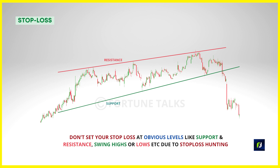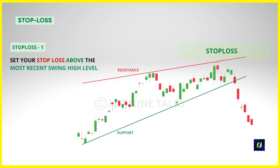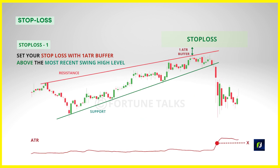For stop loss placement when trading the rising wedge pattern, you don't want to set your stop loss at obvious levels like support and resistance, swing highs or swing lows, because these are obvious levels to smart money as well. Your stop loss should be at a level that if crossed invalidates your trading setup. We are trading a rising wedge, and the pattern is invalid if the price breaks and closes above the top trend line resistance. So keep your stop loss above this resistance level. To be extra safe, give your trades more breathing space by setting your stop loss some distance away from the market structure using an indicator like ATR — set your stop loss one ATR above the most recent swing high level.